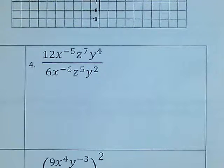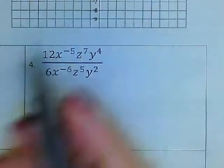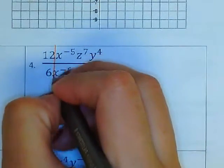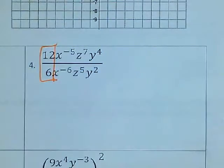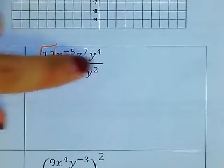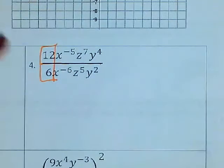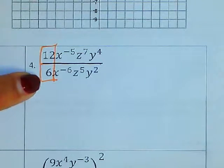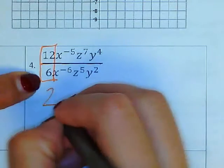Okay, so for number 4, the first thing we do is notice that the numbers right here, I can take care of first. This is a division line, right? The fraction is a division. So 12 divided by 6, I already know that's going to be 2.